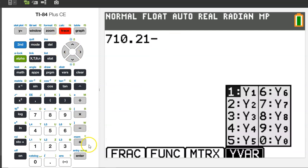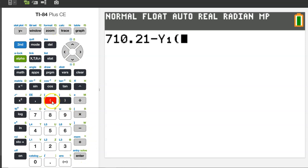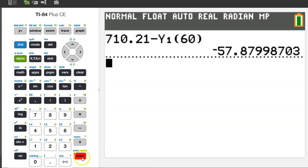710.21 minus y(60), so that's alpha, trace, enter at 60. The residual is -57.8799.